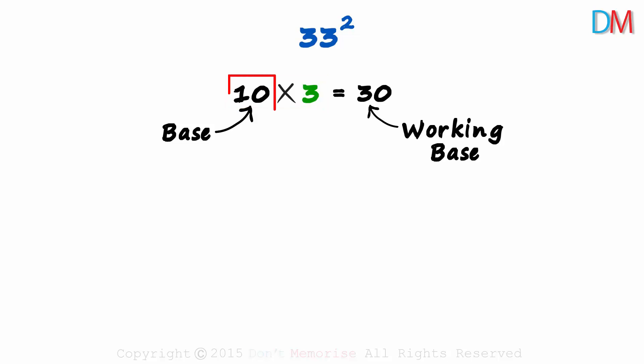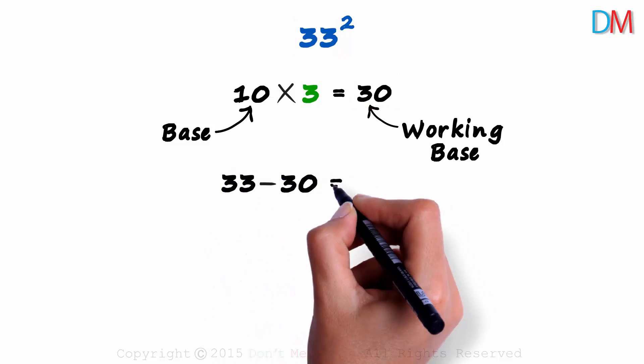Once we are done finding the base and the working base, we find the difference between the number and the working base. That will be 33 minus 30 which equals 3.